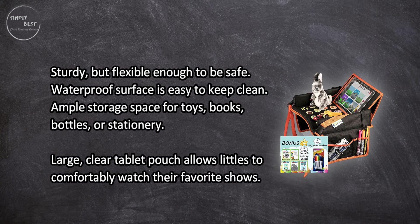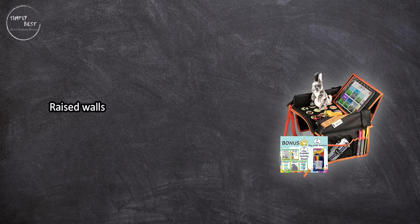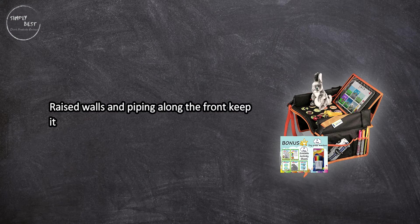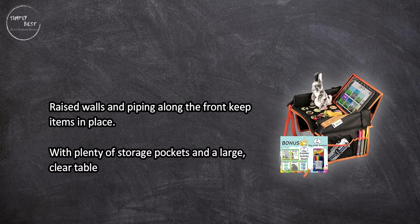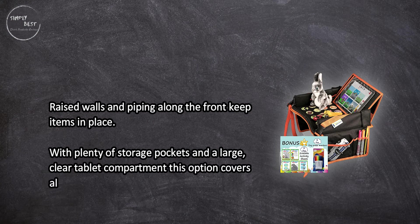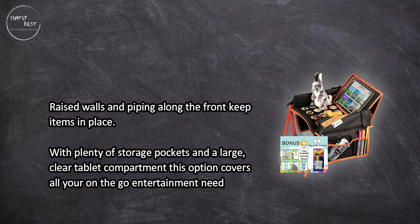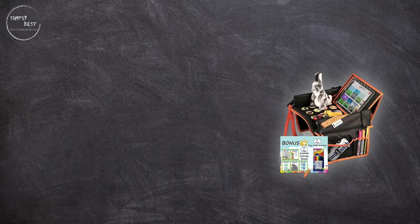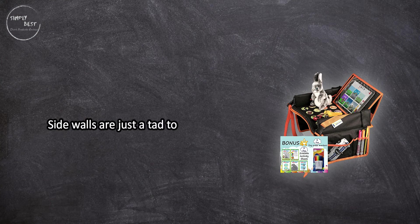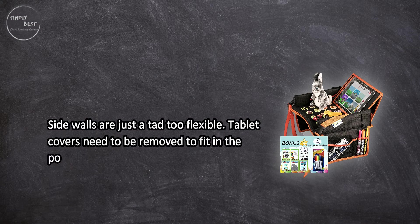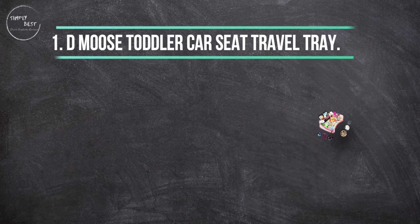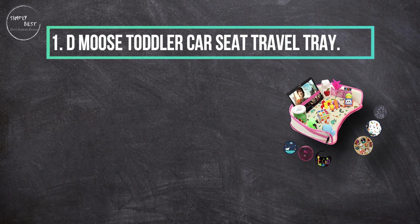Raised walls and piping along the front keep items in place. With plenty of storage pockets and a large clear tablet compartment, this option covers all your on-the-go entertainment needs. Side walls are just a tad too flexible. Tablet covers need to be removed to fit in the pocket.